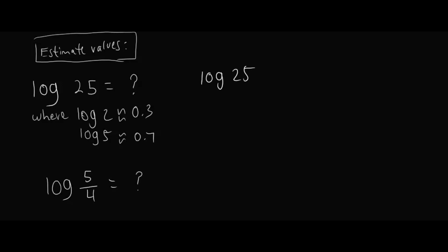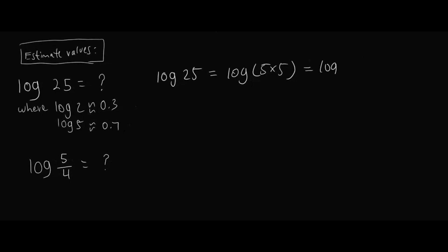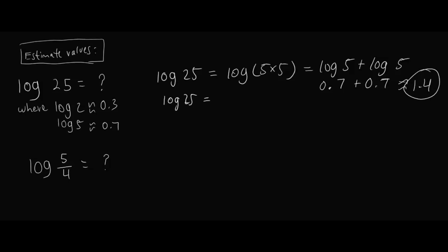So let's estimate. Log 25 — there are two ways to think about this. First, 25 is really just 5 times 5. Using the product rule, log(5 × 5) = log 5 + log 5 = 0.7 + 0.7 = 1.4. Another way is using the power rule: log 25 = log(5²) = 2 times log 5 = 2 times 0.7 = 1.4. You can see how that gives the same value.